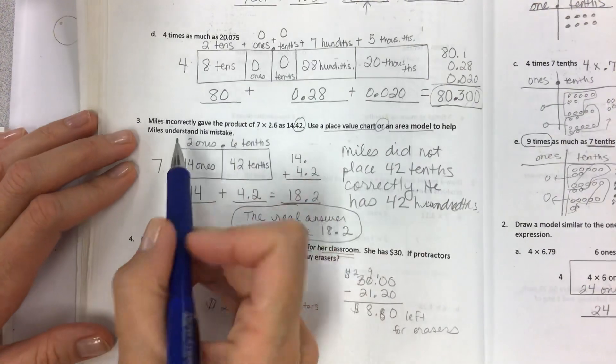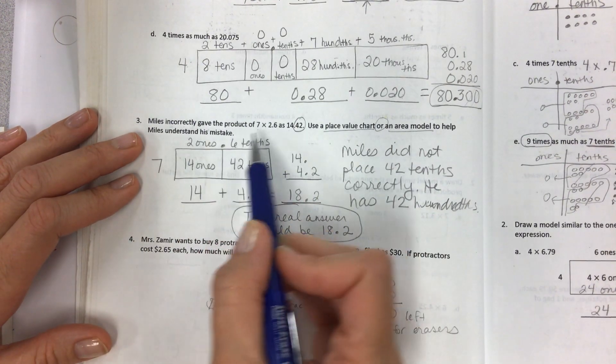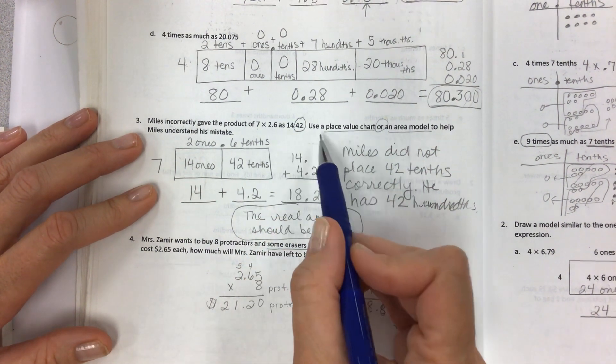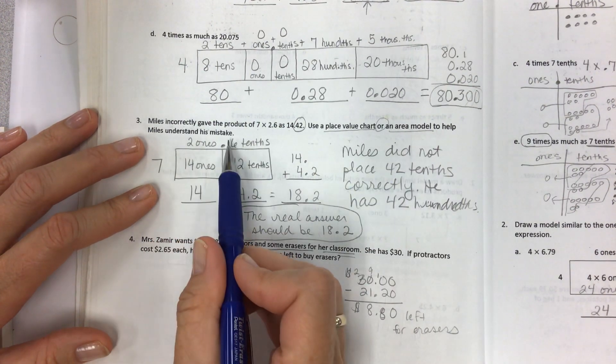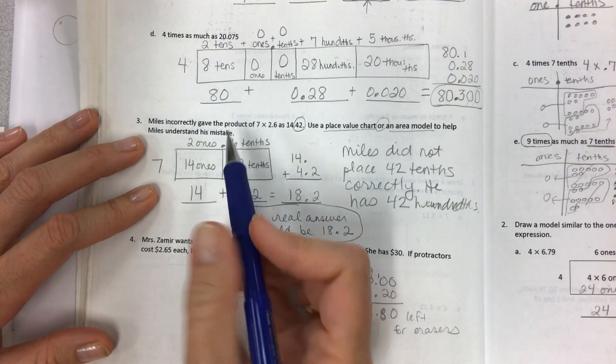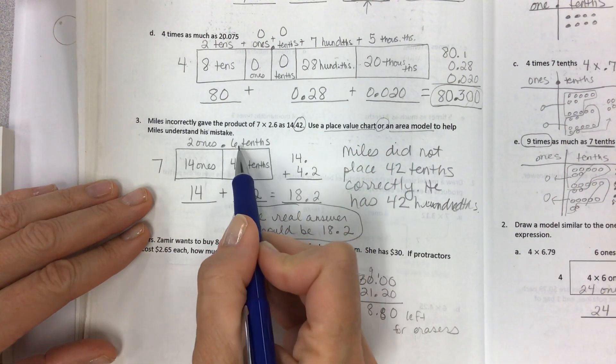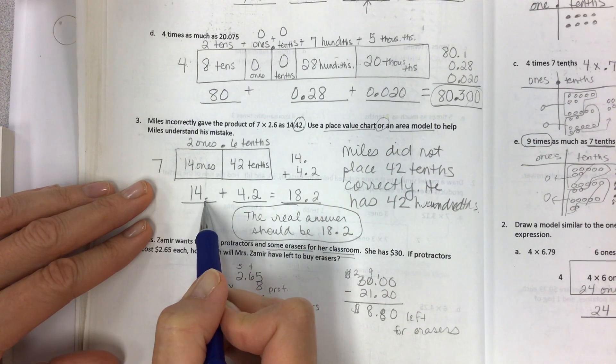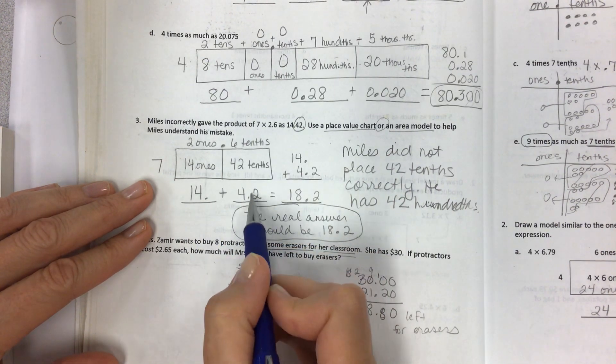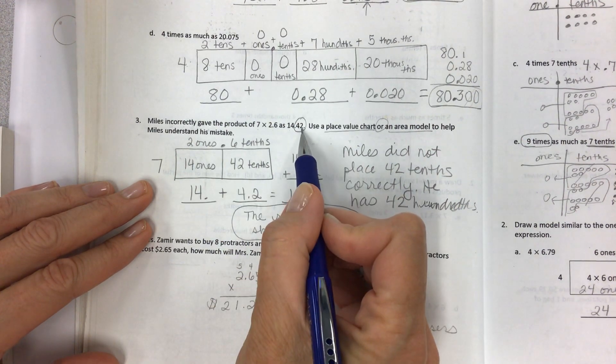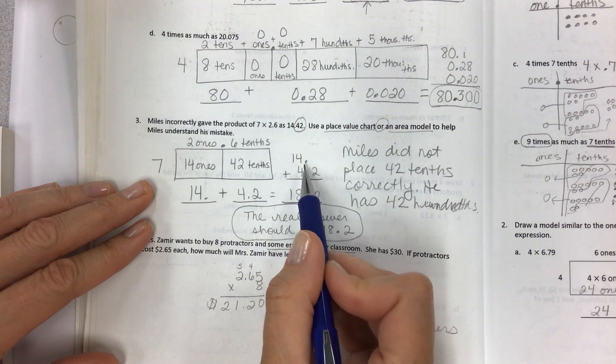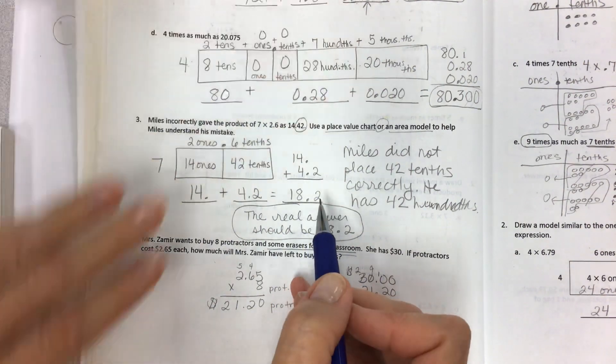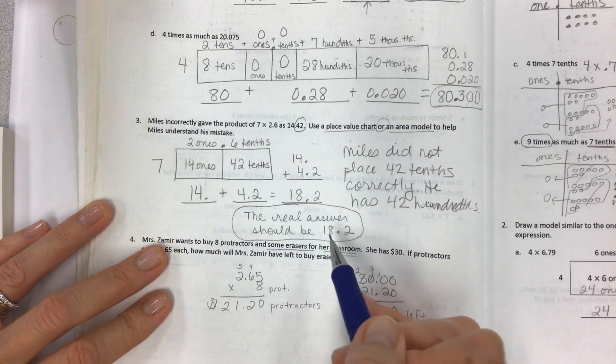For the last two word problems, here we have Miles incorrectly gave the product of seven times two point six or two and six tenths as fourteen and forty two hundredths. Use the place value chart or an area model to help Miles understand his mistakes. So if we use this area model and you set it up with the two and six tenths labeling unit form, then you should see that the fourteen ones looks like this. Remember the decimals over here. And the forty two tenths ends in the tenths place, not the hundredths place. And then when you line them up, you can see that he just called it the wrong name or misaligned it. And so he did not place the forty two tenths correctly.